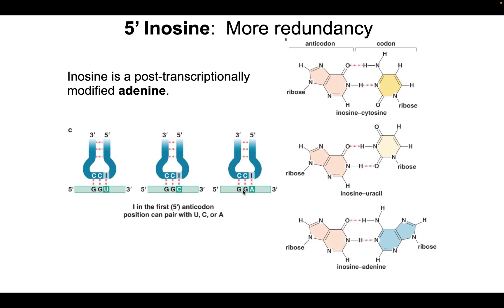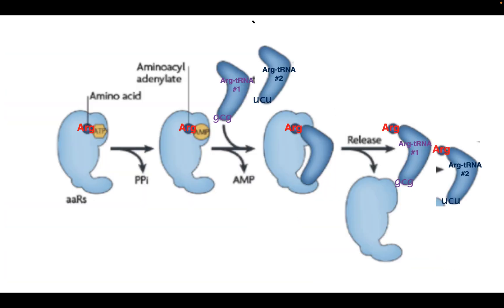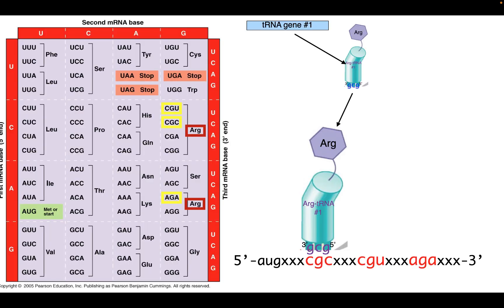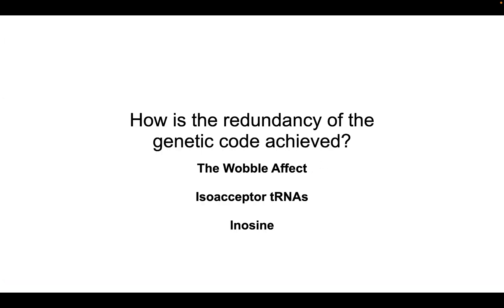So we have, again, three different reasons why or how the genetic code is redundant. Again, let's define redundancy here. Notice arginine is encoded by one, two, three, four, five, six different codons. That's redundancy. Well, the molecular mechanism by which that occurs is three different types: from the wobble effect, from inosine, which is kind of like a little bit more complex wobble effect, and then isoacceptor tRNAs.